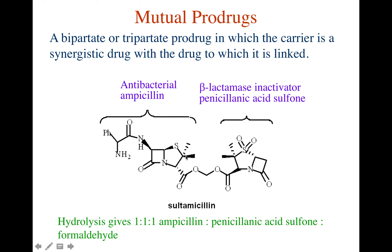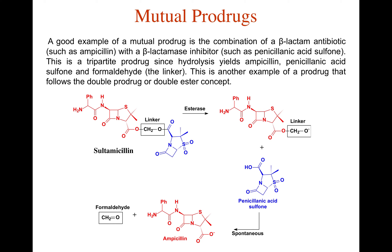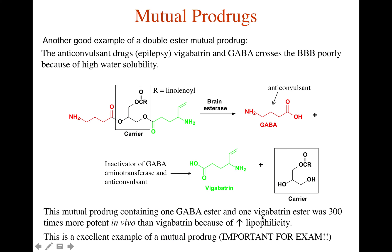The hydrolysis of this mutual prodrug gives one molecule of ampicillin, one molecule of penicillinic acid sulfone, and one molecule of formaldehyde. The ratio is exact - this is important: when using a mutual prodrug approach, the two drugs need to be released in the same ratio and same concentration. A good example is the combination of the beta-lactam antibiotic ampicillin and the beta-lactamase inhibitor penicillinic acid sulfone.